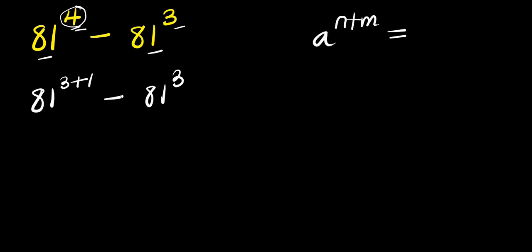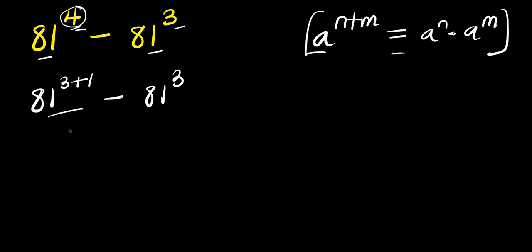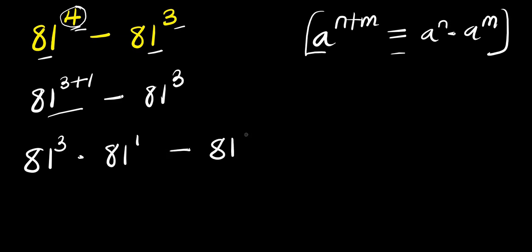Now if you have a to the power n plus n, this equals a to the power n times a to the power n. So we apply this identity here, and we will have eighty-one to the power three times eighty-one to the power one minus eighty-one to the power three.